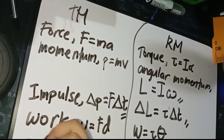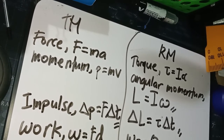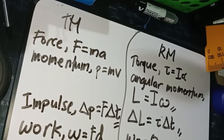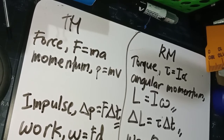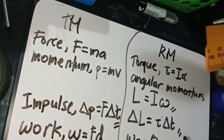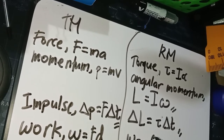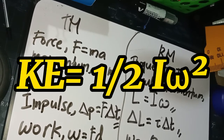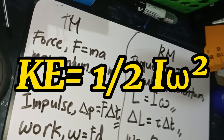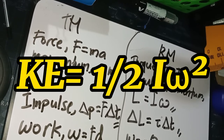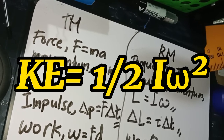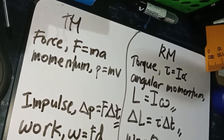Finally, kinetic energy in translational motion is expressed as one-half mv squared. In rotational motion, kinetic energy equals one-half times moment of inertia I times angular velocity omega squared. That is the formula for rotational kinetic energy. That's all for this lecture video. Thank you.